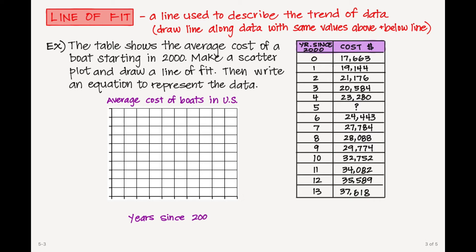So if you're recording this in your notebook, I know you might need to pause it and copy this down. But I'm going to label my graph the average cost of boats in the U.S. My x-axis is going to be the years since 2000. And I'm going to count by twos on mine. And then the left-hand side is going to be the cost in dollars. And I'm going to count by 5,000.